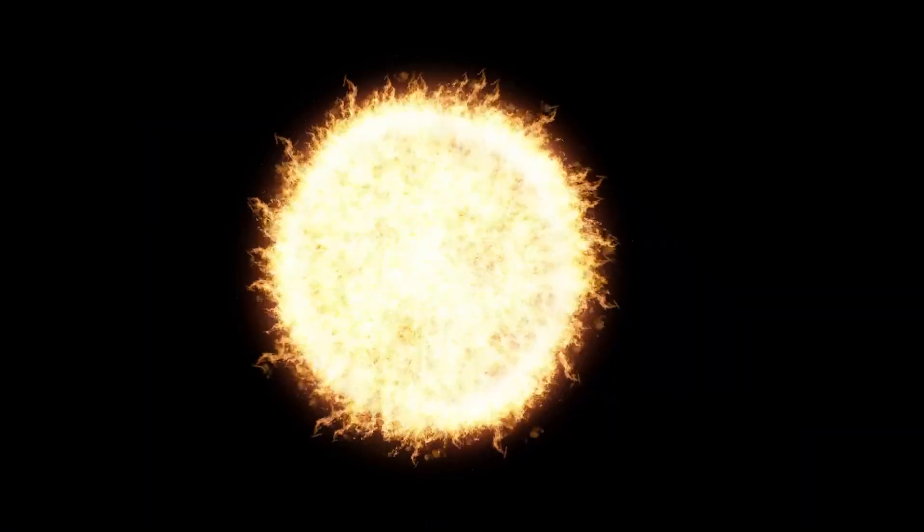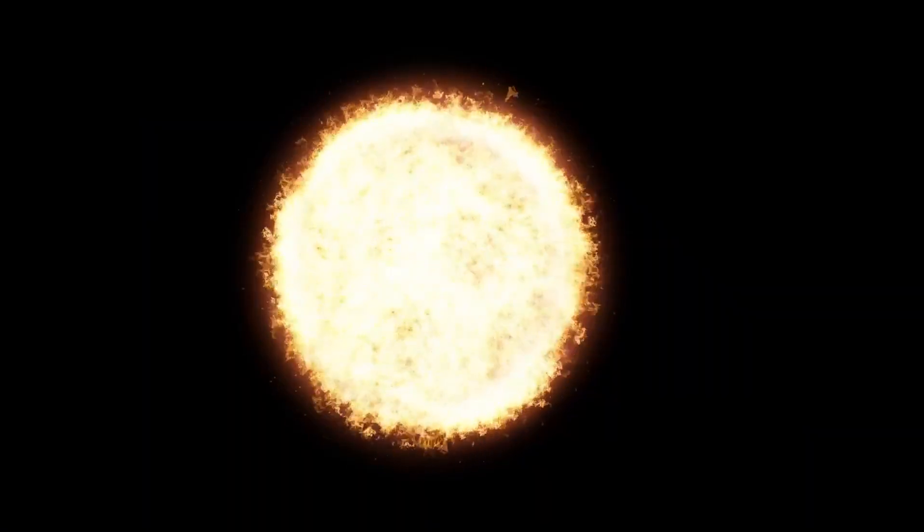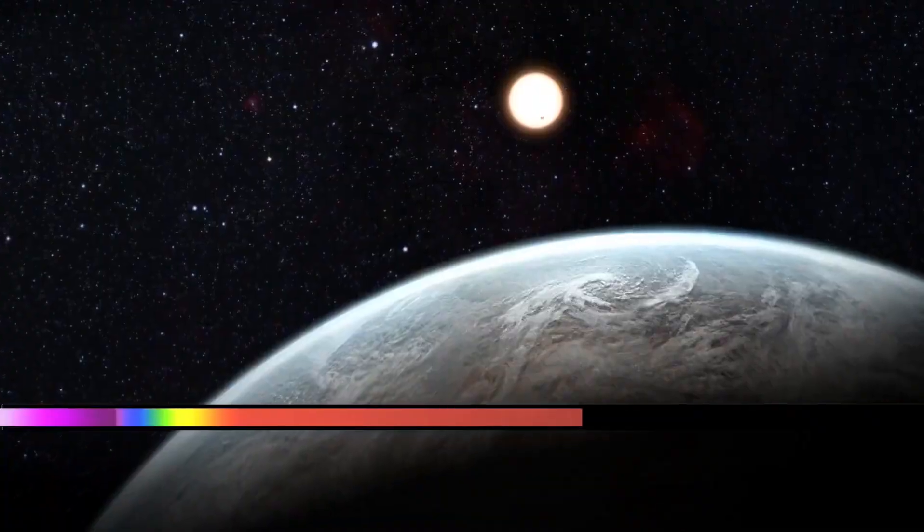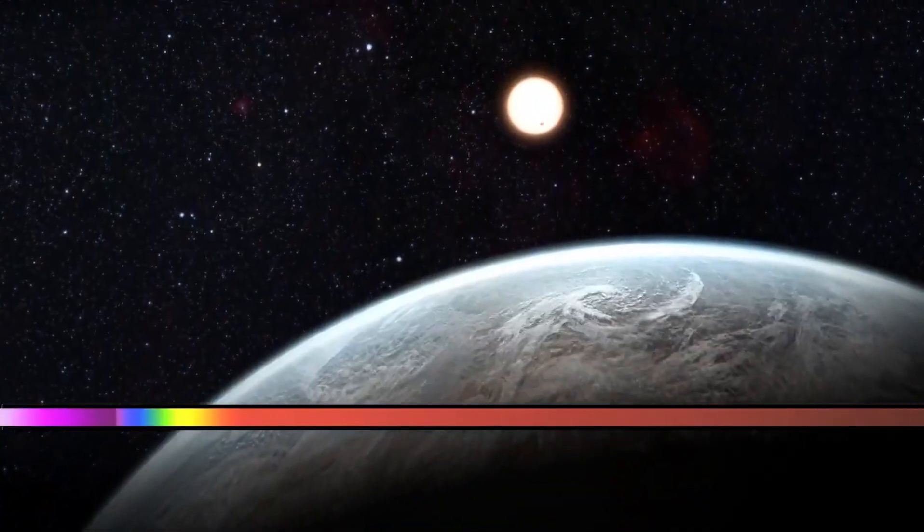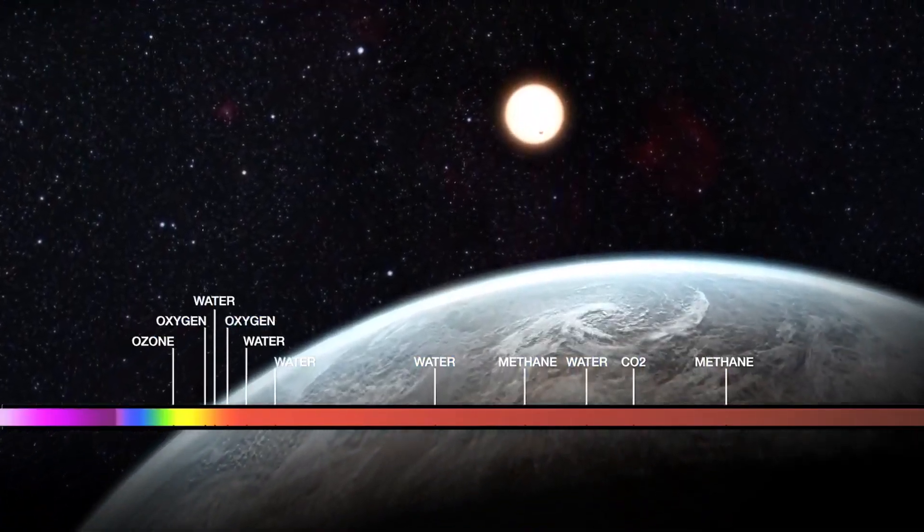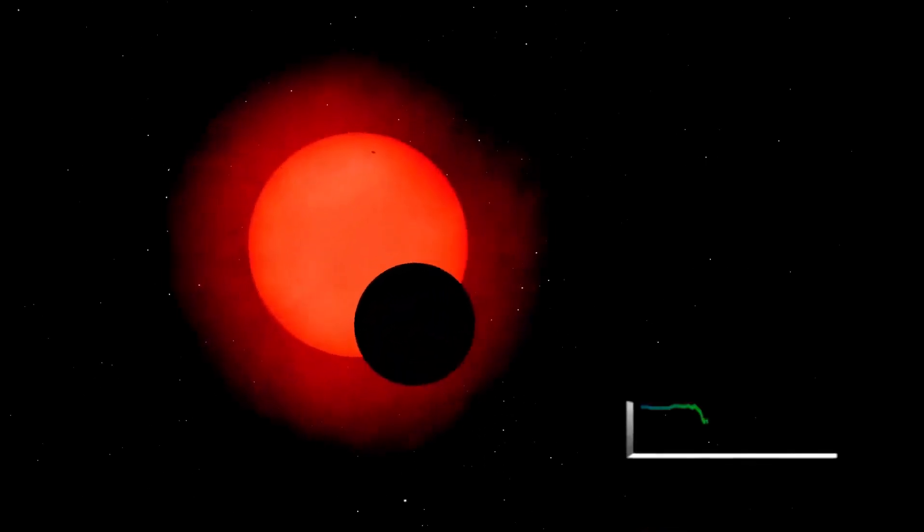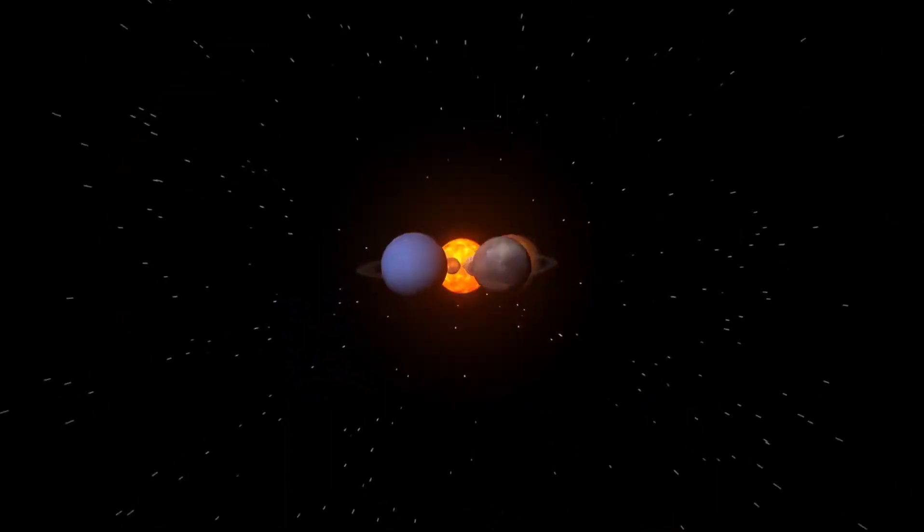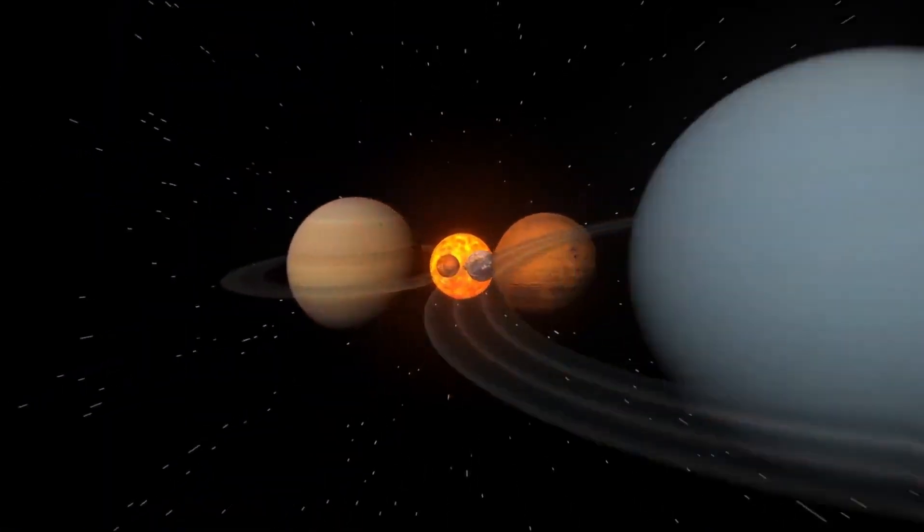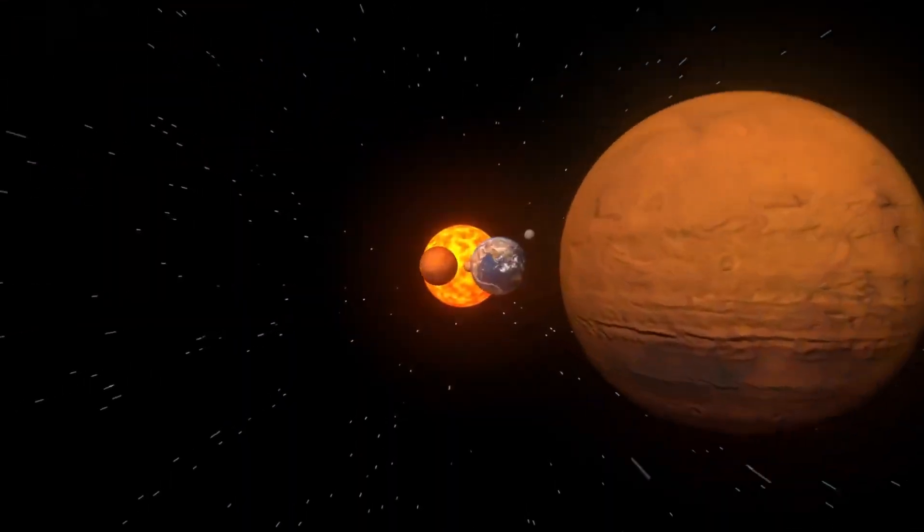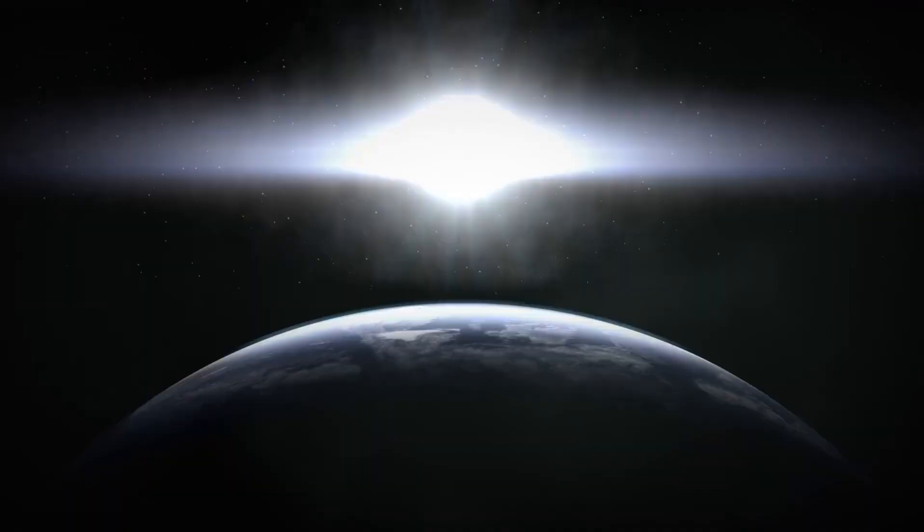The first exoplanets were discovered in the 1990s, and today, more than 5,000 confirmed planets orbit distant stars. However, only a fraction of them have been directly imaged. Most exoplanets are so distant that they can only be detected when they pass in front of their host stars, dimming the starlight slightly.